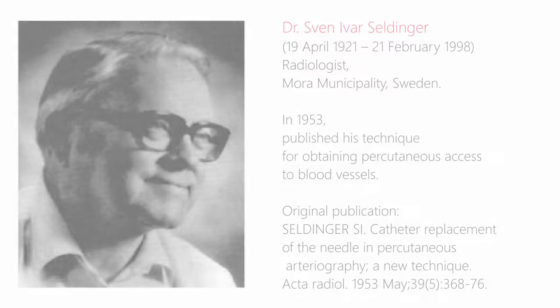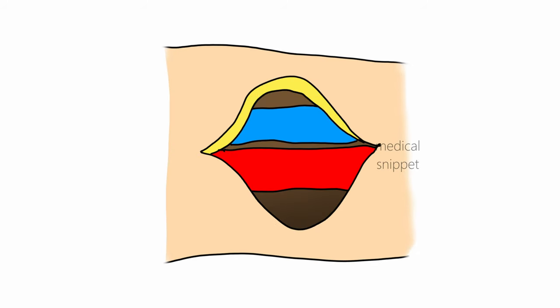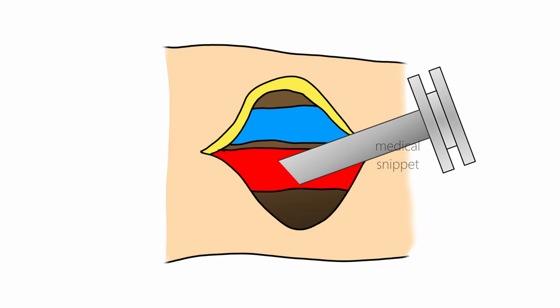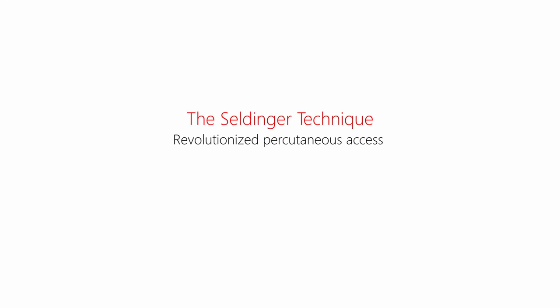Before this technique was invented, vascular access was done by exposing the desired artery surgically and inserting a sharp wide-bore trocar. After the procedure, the artery was ligated or repaired. These techniques were associated with a high rate of complications, limiting their use only to larger arteries. Thus, the Seldinger technique revolutionized percutaneous access not only to vascular structures, but to many hollow organs or cavities in the body.